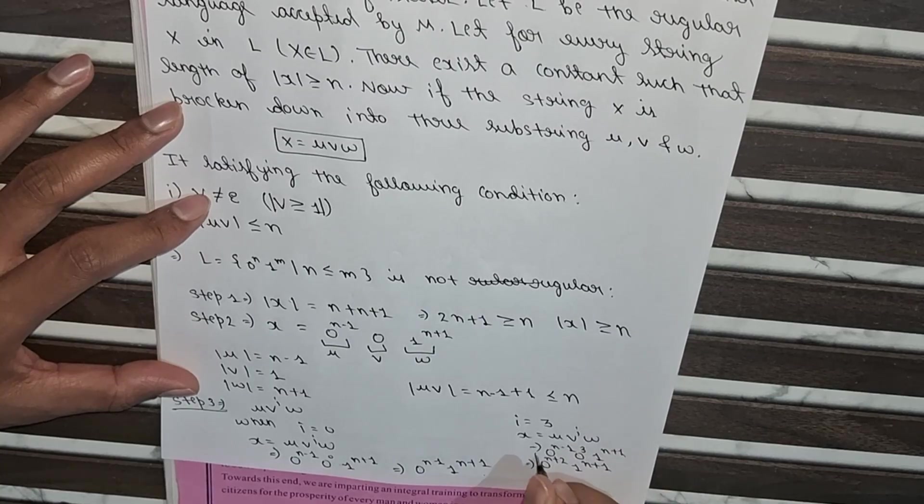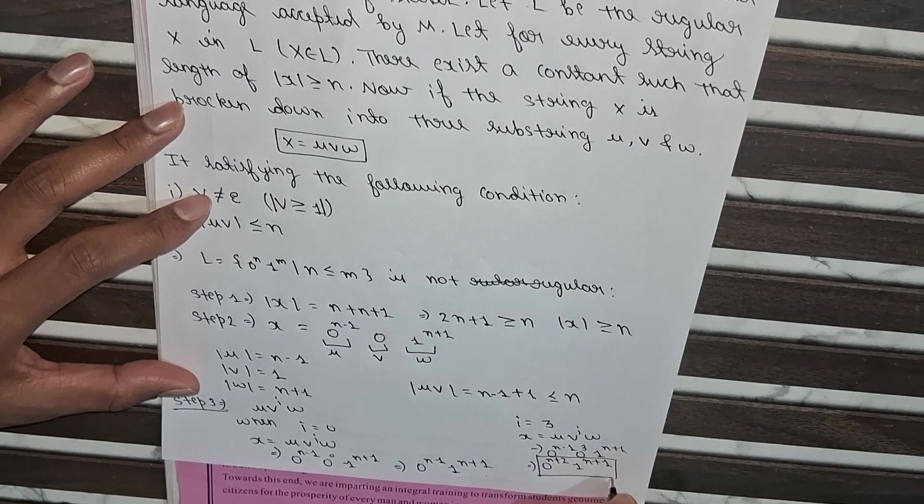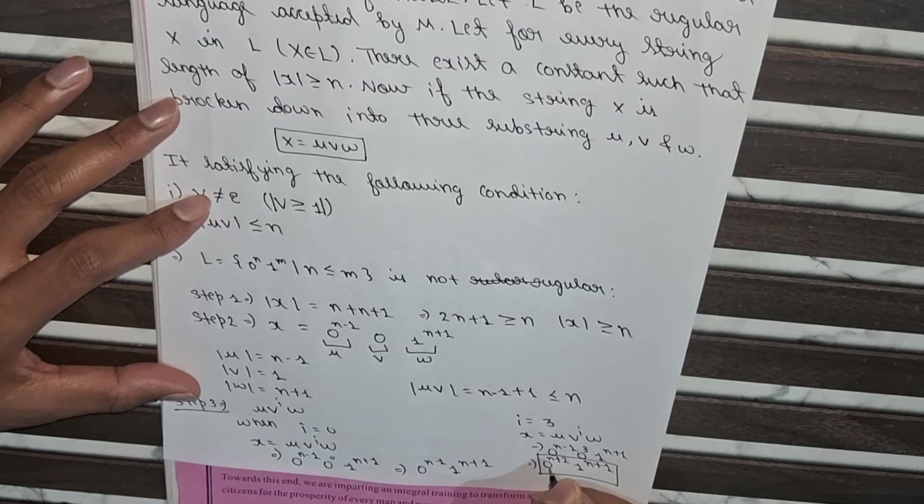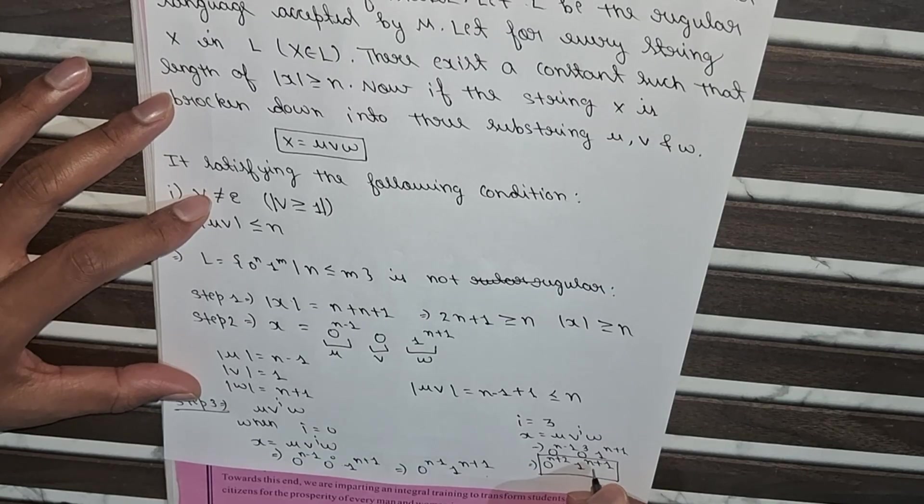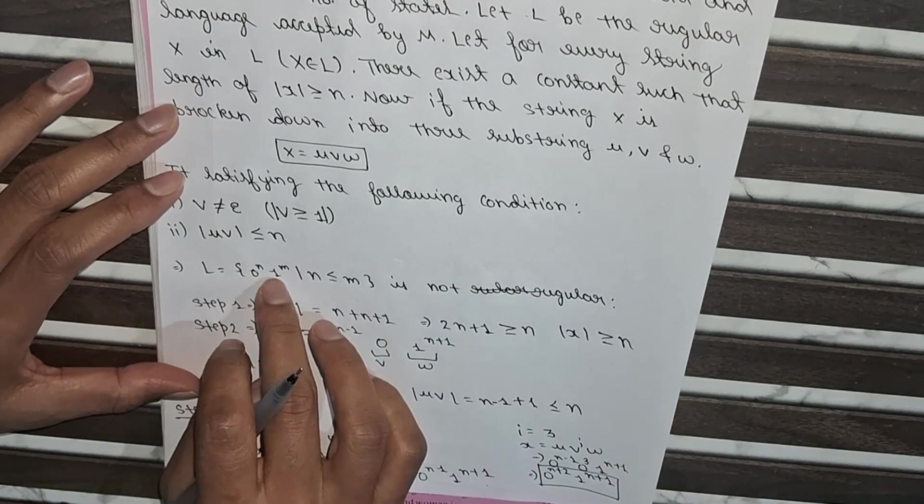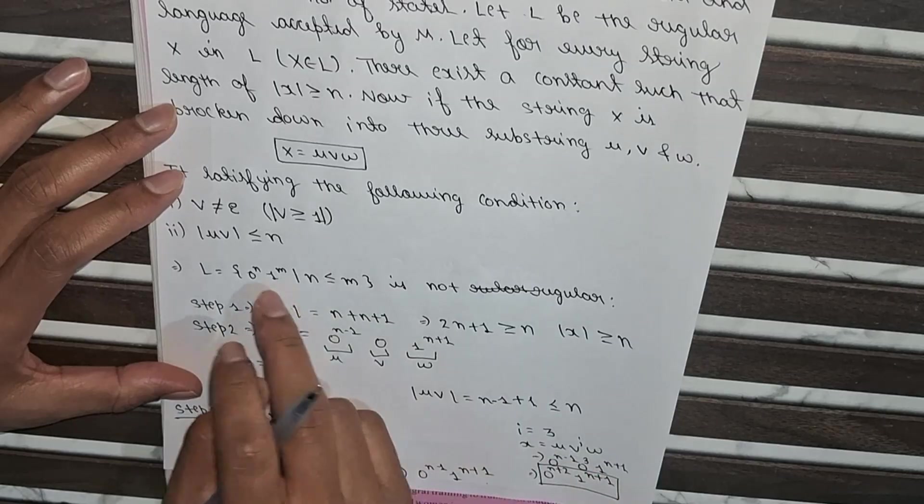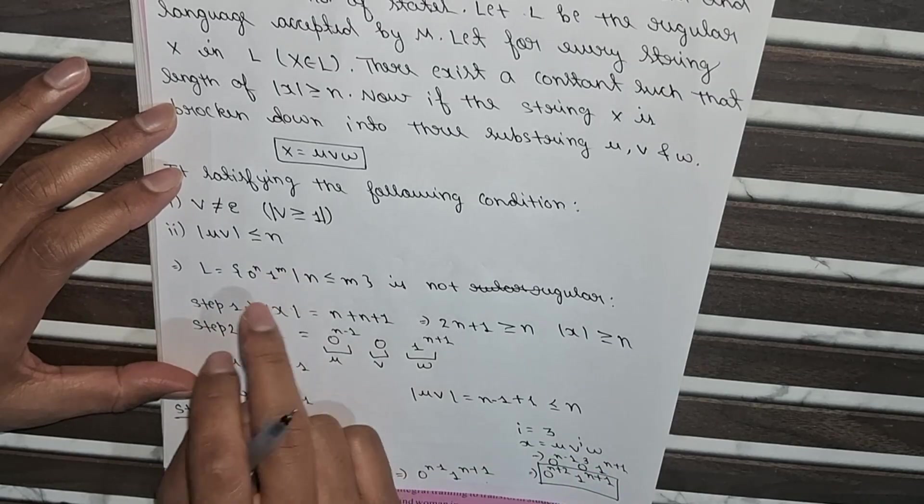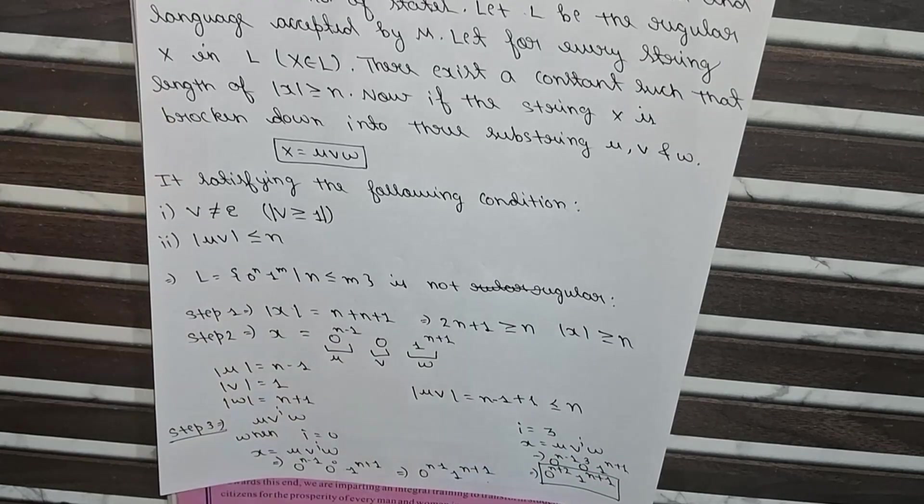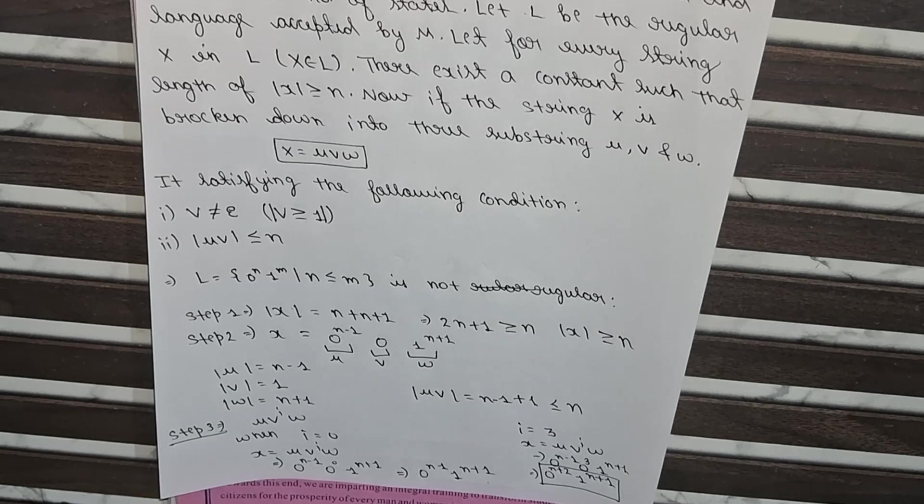So here we can clearly see that the condition here comes: number of zeros are greater than number of ones. So it contradicts this language, so it doesn't fulfill the requirement of this language here. So we can say that this is not a regular language. So like this we will prove using pumping lemma theorem.